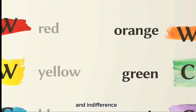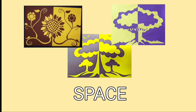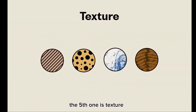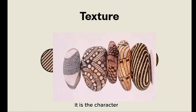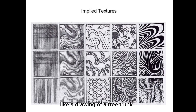The fourth element is space, which refers to distances or areas around, between, or within components of a piece. In visual arts, space may be positive or negative. Positive space refers to the part enclosed in a shape, while negative space refers to the opposite area. The fifth element is texture — the element that appeals to our sense of feel, whether rough or smooth, bumpy or slippery. Real texture is the actual texture of an object, while implied texture makes a piece look like a certain texture, such as a drawing of a tree trunk that looks rough but is actually smooth paper.